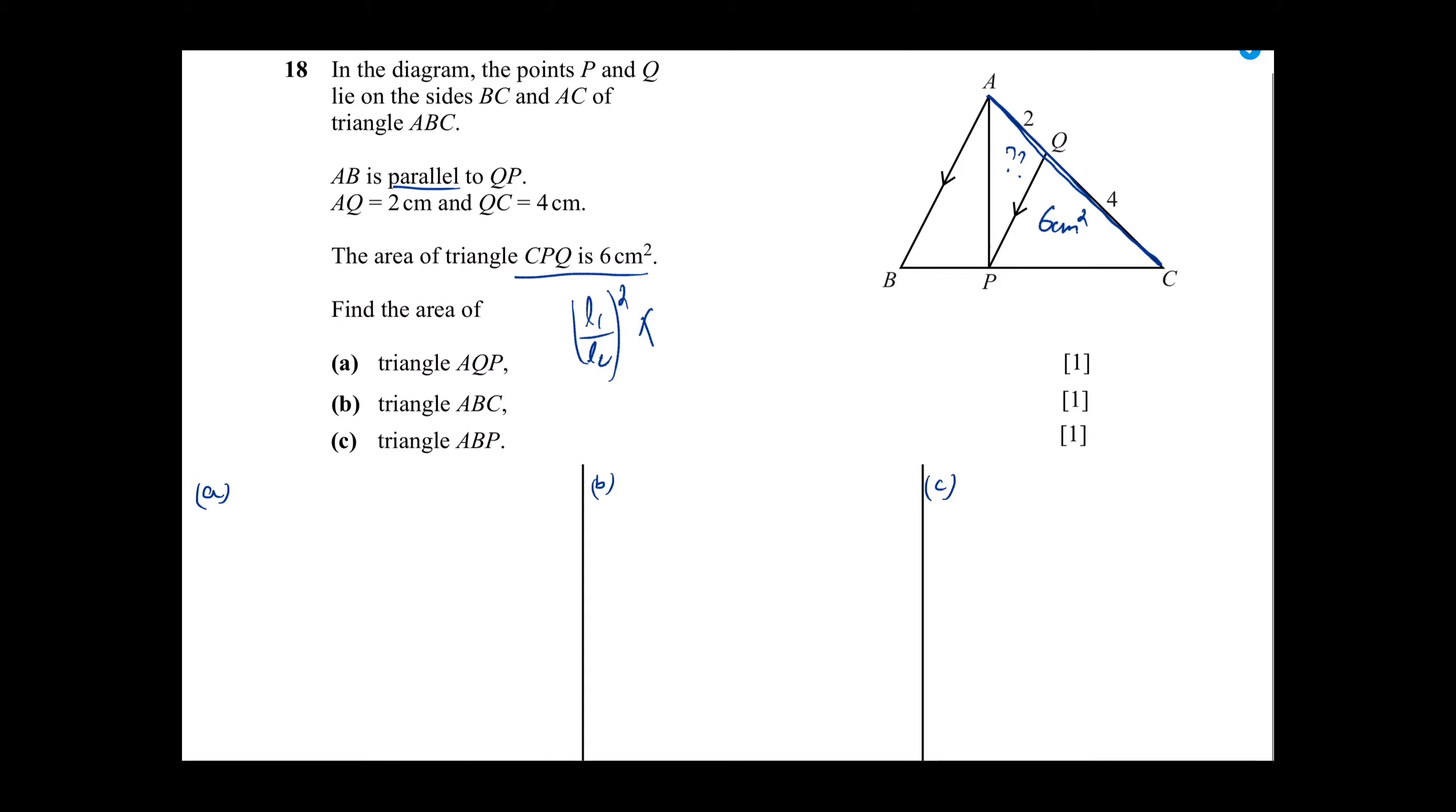Because AQC is a line, we work on this. We rotate it such that AQC is horizontal. We don't have pinpoint accuracy but we just have to make it so that AQC is your horizontal line. Now, AQ is 2cm and QC is 4cm and CPQ is 6cm².